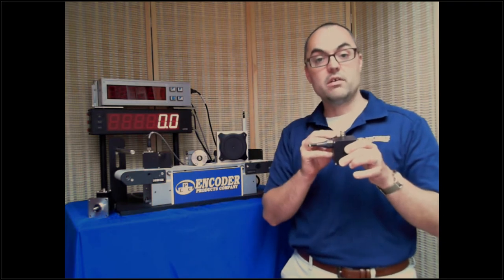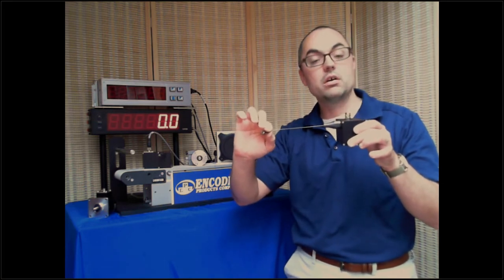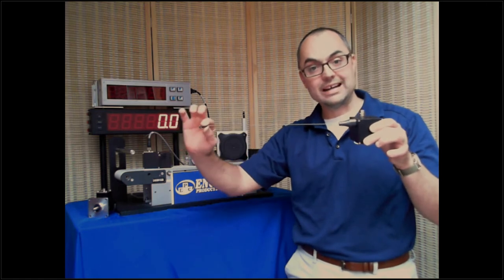This encoder puts out 500 ticks or pulses per inch. So I've got a resolution here of two thousandths per tick mark of an inch of travel. So I can very accurately measure with this encoder the linear distance.